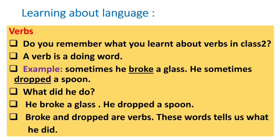Do you remember what you learned about verbs in class? Do you remember what a verb is? A verb is a doing word. For example: he broke a glass, he dropped a spoon. What did he do? He broke a glass, he dropped a spoon. Broke and dropped are verbs — these words tell us what he did.